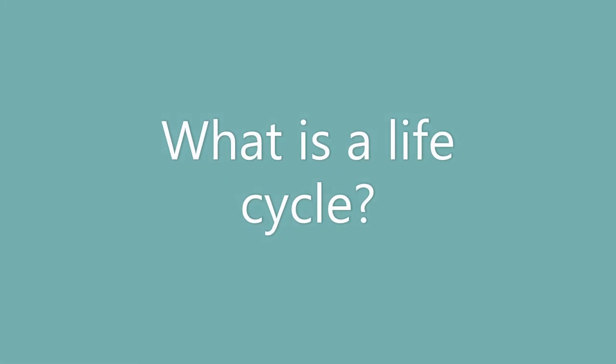What is a life cycle? A life cycle is a series of steps living things go through from birth to death. These steps may vary depending on the being, but the steps that are always there are birth, growth, reproduction, and death. The end of a life cycle is the start of a new one, so it is commonly represented as a circle, like the circle of life.